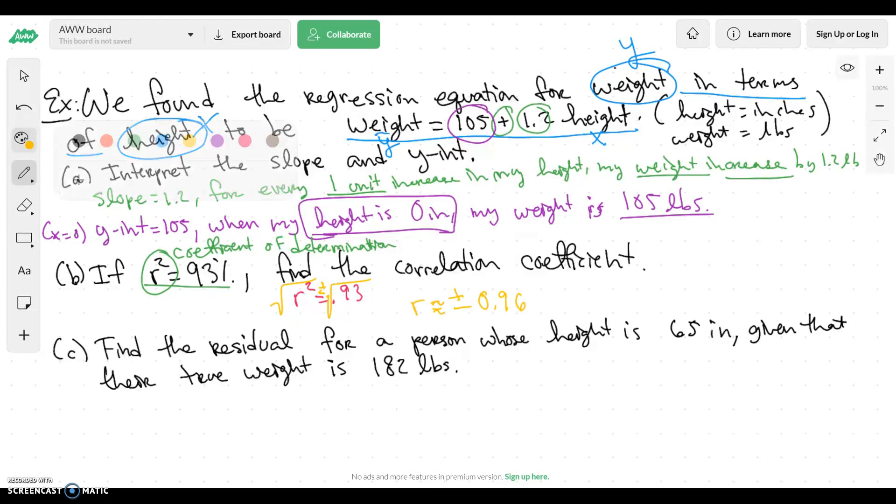Now, which one should it be? Should it be the positive one or should it be the minus one? Well, what we've got to do now is we've got to look at the slope. Our slope is positive. So that means that I'm, it's positively increasing, it's a positive trend. So it makes sense for it to be positive. So r in this case is equal to a positive 0.96. Notice that my correlation is very strong. So that means there is a strong relationship between height and weight.